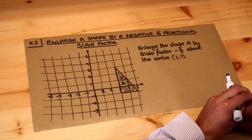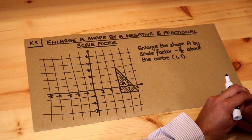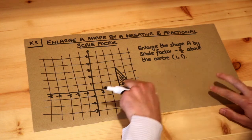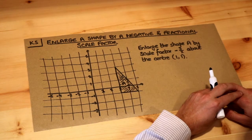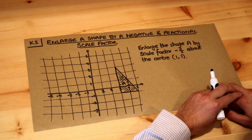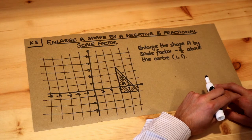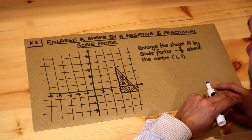Hello and welcome to this Dr Ross Maths key skill video on enlarging a shape by a negative and fractional scale factor. We've got shape A here and we'll enlarge it by scale factor minus 3 over 2, or minus 1.5, about the centre (1, 1).